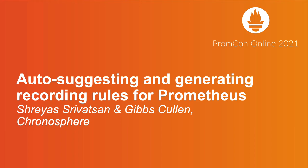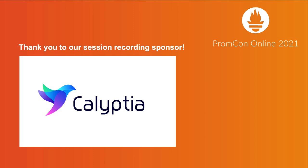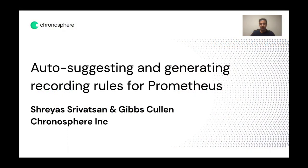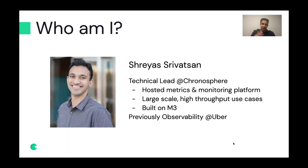Hi everybody, my name is Shreyas and today we're here to talk about how we can auto-suggest and auto-generate recording rules with the goal of speeding up dashboards and query performance in general. I'm a Technical Leader at Chronosphere where we're building a hosted metrics and monitoring platform targeting large-scale high-throughput use cases. The platform is built on M3, which is an open source remote storage backend for Prometheus. Prior to this I was at Uber on the Observability team, primarily working on alerting and dashboarding.